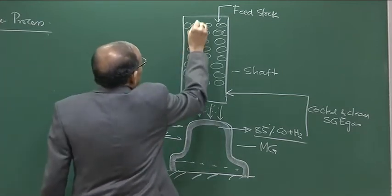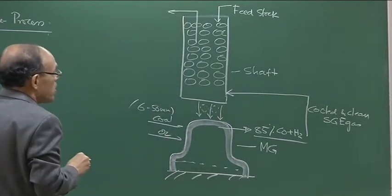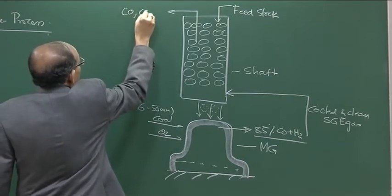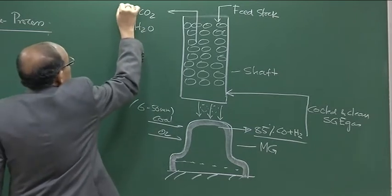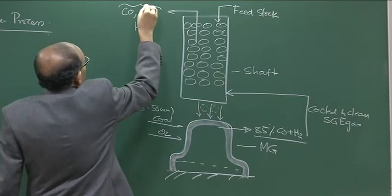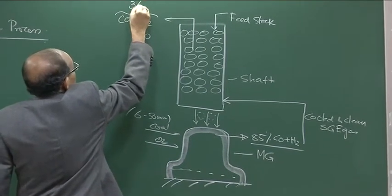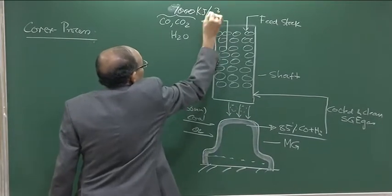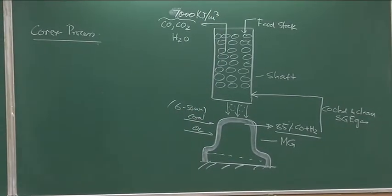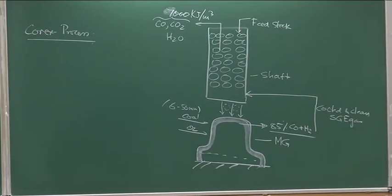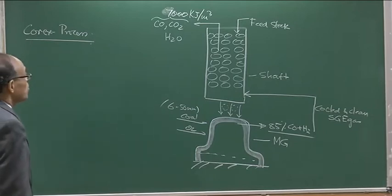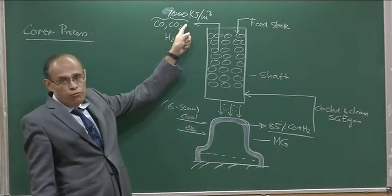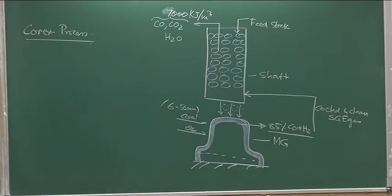The exit gas from the Corex process will contain a large proportion of CO, CO₂, and H₂O — somewhere around 30 to 40 percent CO — and the calorific value is around 7,000 kilojoules per cubic meter. This is significantly larger than the corresponding carbon monoxide concentration of blast furnace gas, which has about 3,000 to 3,600 kilojoules per cubic meter.